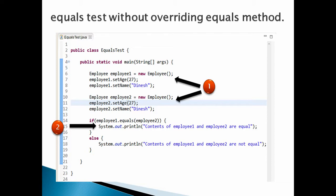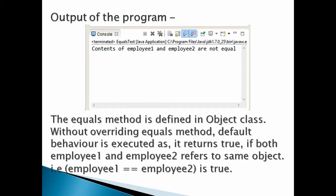Let's create a test class named EqualsTest and discuss its functionality point by point. Number one, create a main method. In the main method, create two employees named employee1 and employee2, and set name and age for both employees to Dinesh and 27. Number two, in order to check whether the contents of the two objects are equal, we call employee1.equals(employee2). As per our scenario and definition, it must return true and print: 'Contents of employee1 and employee2 are equal.' But when we run the EqualsTest class, we get the output: 'Contents of employee1 and employee2 are not equal,' as shown in the figure.